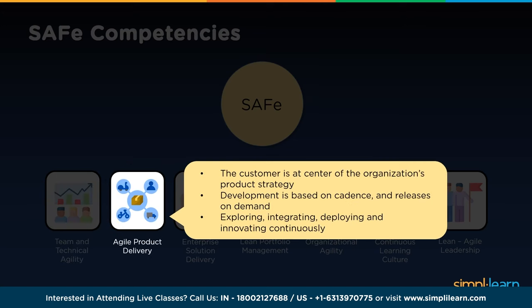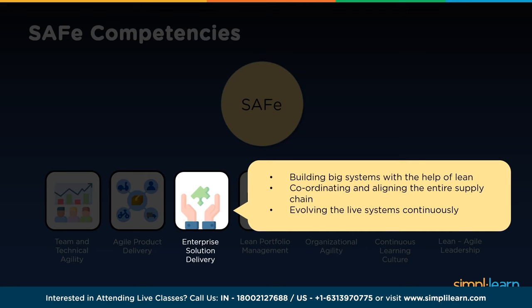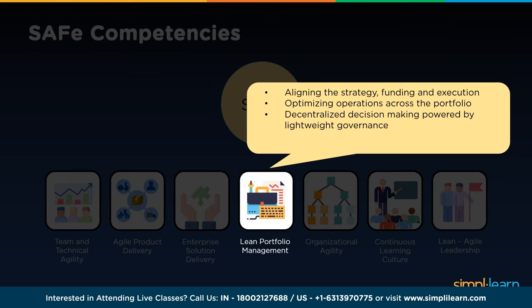Agile product delivery refers to keeping the customer at the center of the organization's product strategy — development is based on cadence and releases on demand, exploring, integrating, deploying, and innovating continuously. Enterprise solution delivery involves building big systems with lean practices, coordinating and aligning the entire supply chain, and evolving the live system continuously to ensure full enterprise visibility and provide solutions accordingly.